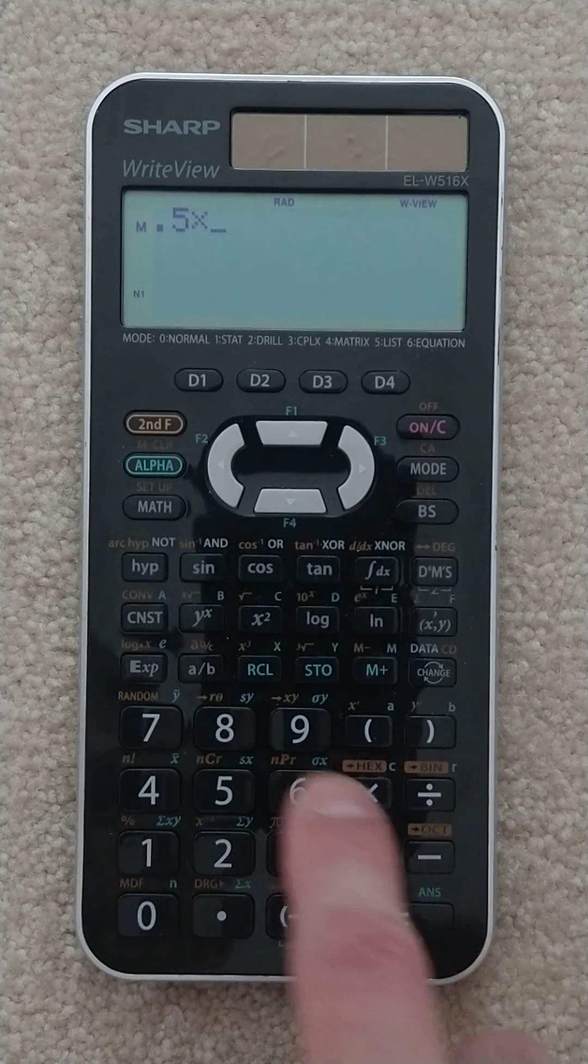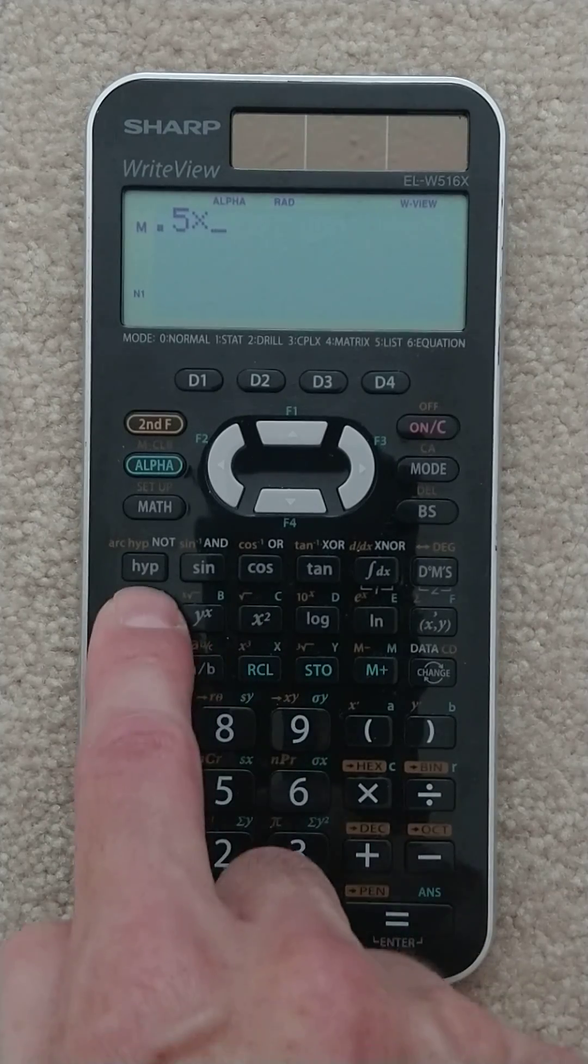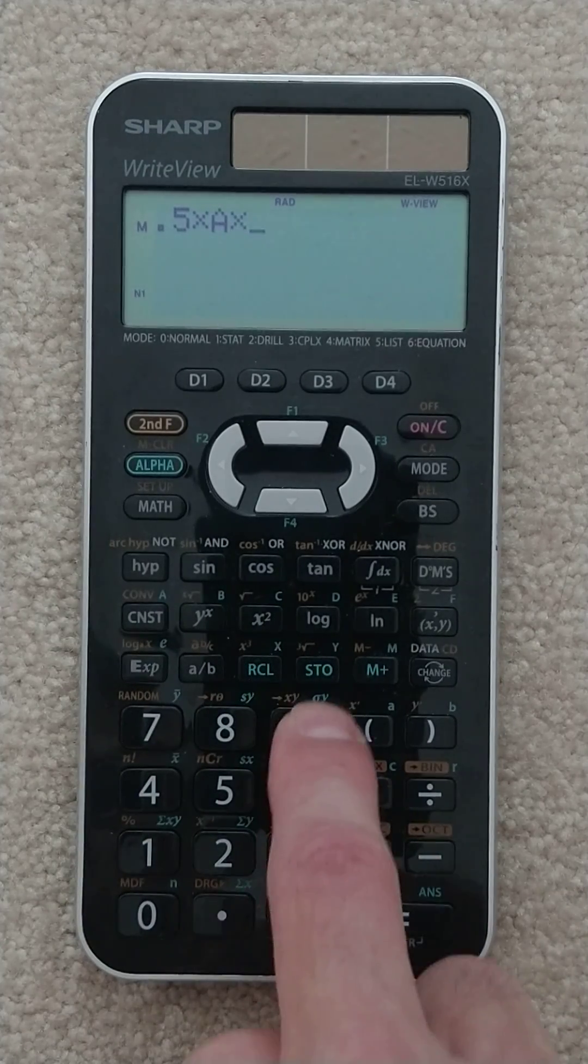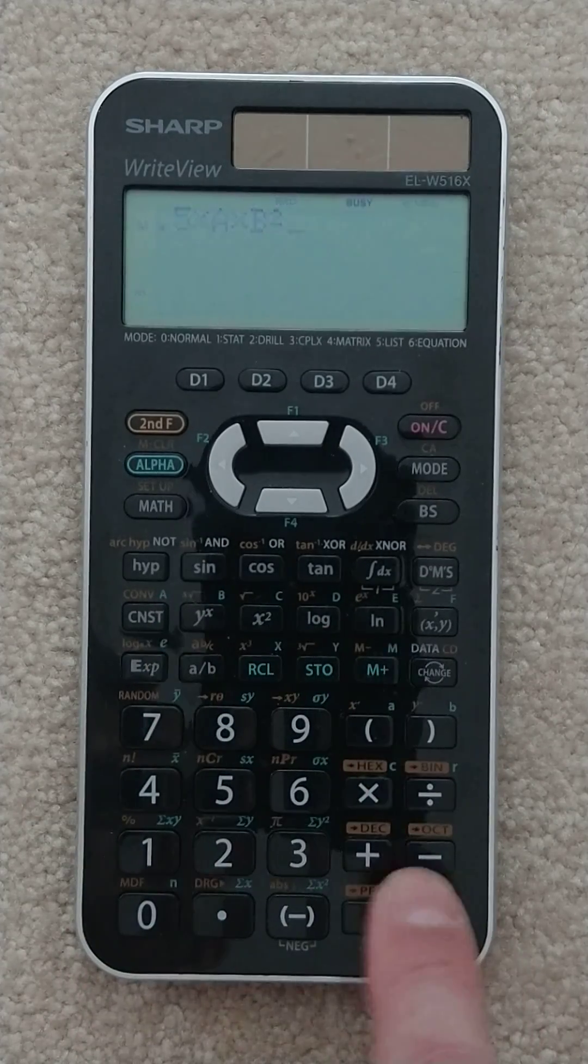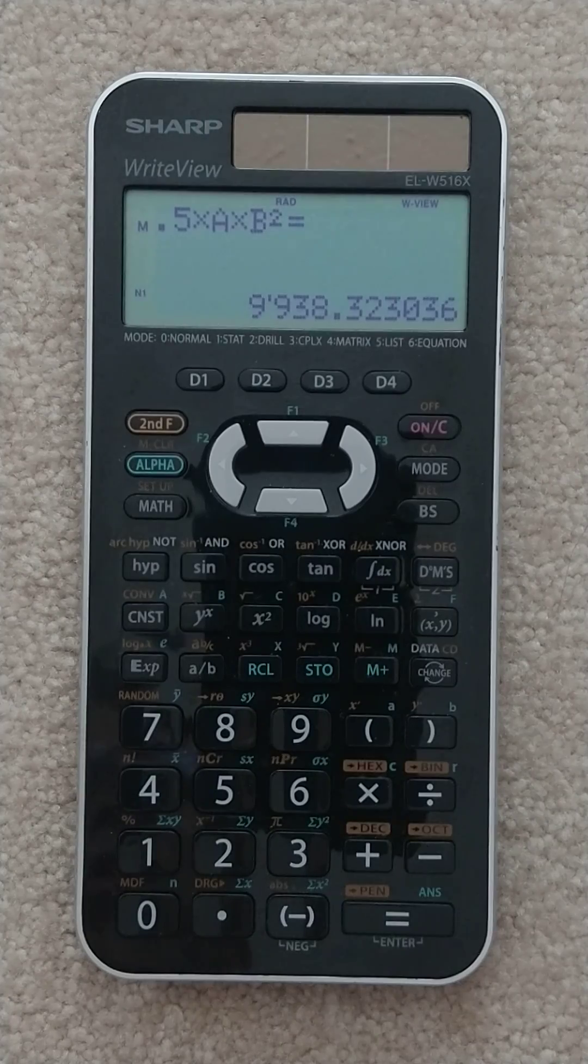And now I can just do one-half mass, which was recall A, times my velocity, recall B, and square it. And we get the same result, 9,938 joules.